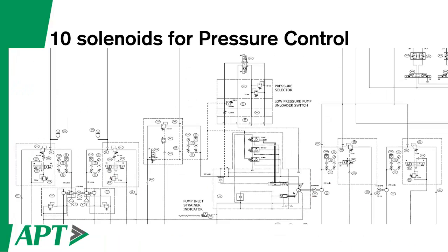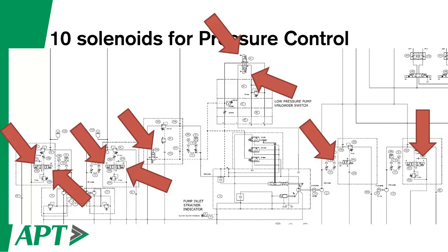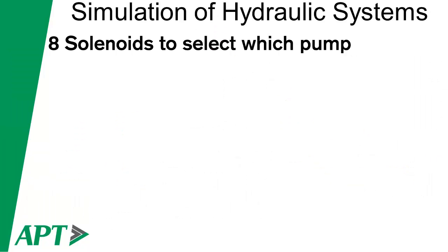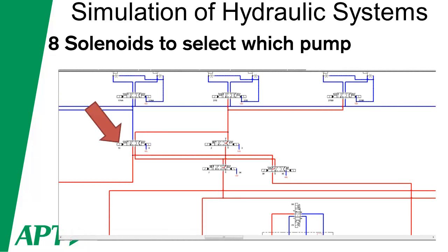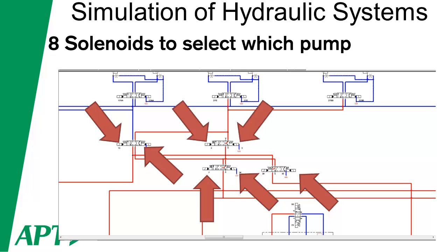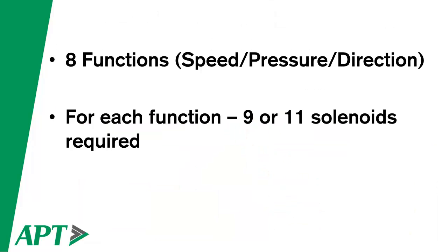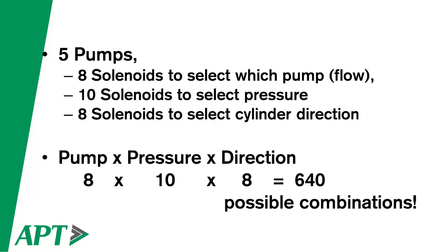To control pressure in the system, there are 10 solenoids which control pressure — you can see them laid out across all the different pumps. Some control operating or compensator pressure, others control relief valves. Now because we're using different pumps for different scenarios — extending, retracting, high flow or low flow — there are a further eight solenoids to select which pump delivers flow to which sets of valves. So there are five pumps, eight solenoids to select which pump, 10 to select the pressure, and eight solenoids to select cylinder direction.